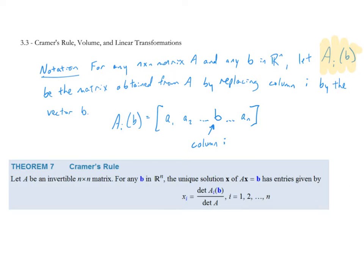For an n-by-n matrix A and any vector B in R^n, the notation we're introducing is A subscript i of B. That is the matrix obtained from A by replacing column i with the vector B. So whichever column is the subscript, that is replaced by the vector B. We'll see what that looks like in our first example.